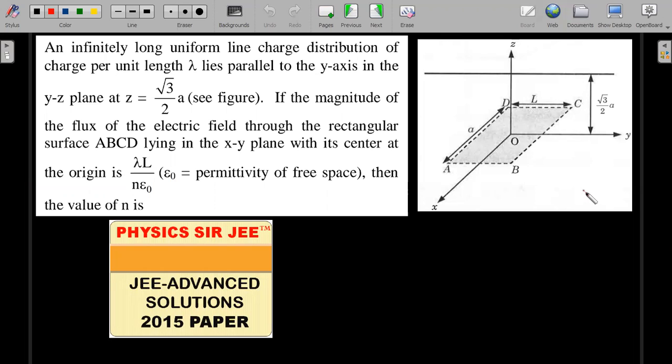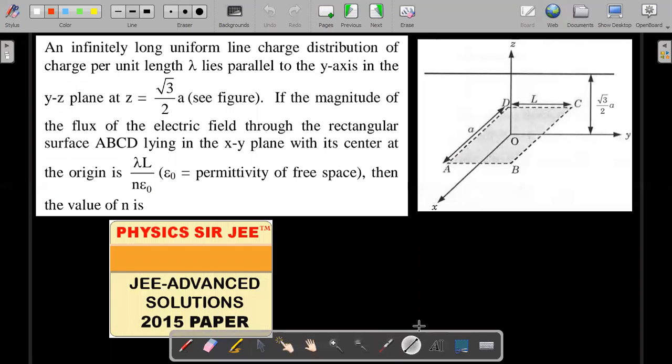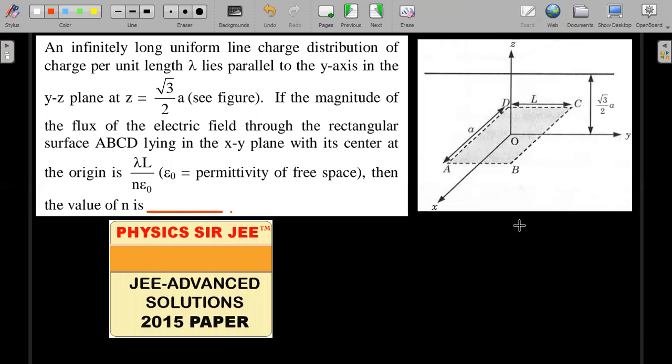An infinitely long uniform line charge distribution of charge per unit length λ lies parallel to the y-axis in the y-z plane at z equals √3a/2. If the magnitude of the electric flux through the rectangular surface ABCD lying in the x-y plane with its center at origin is λL/nε₀, where ε₀ is permittivity of free space, then the value of n in this expression is... This was a question of integer value as the answer.